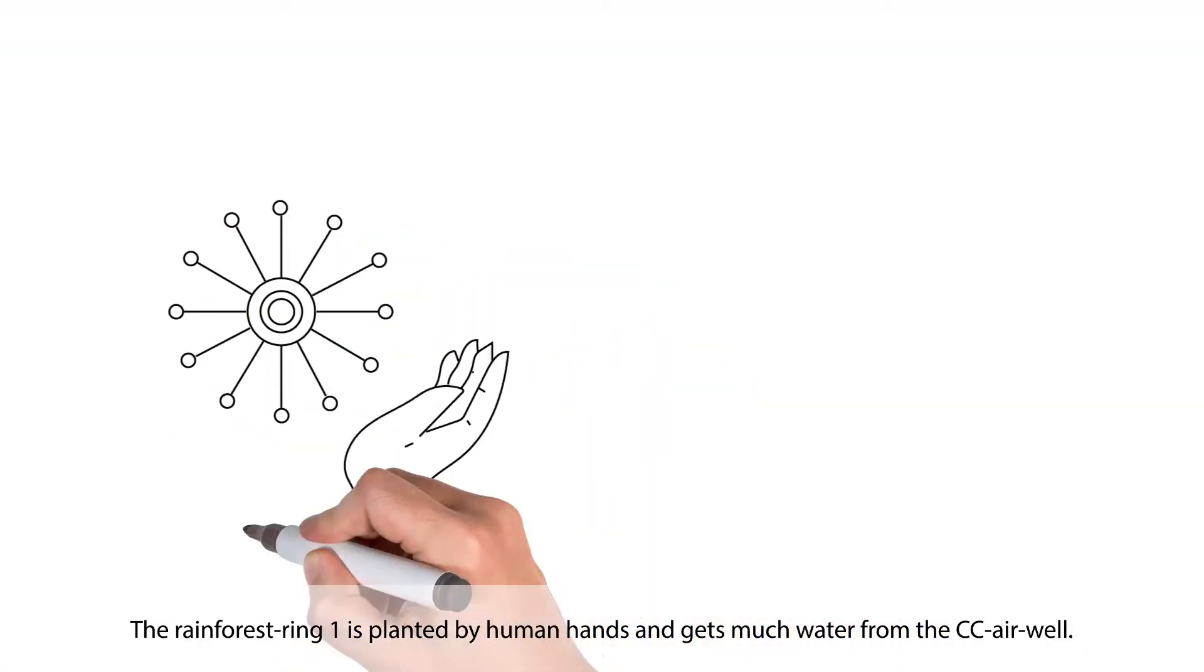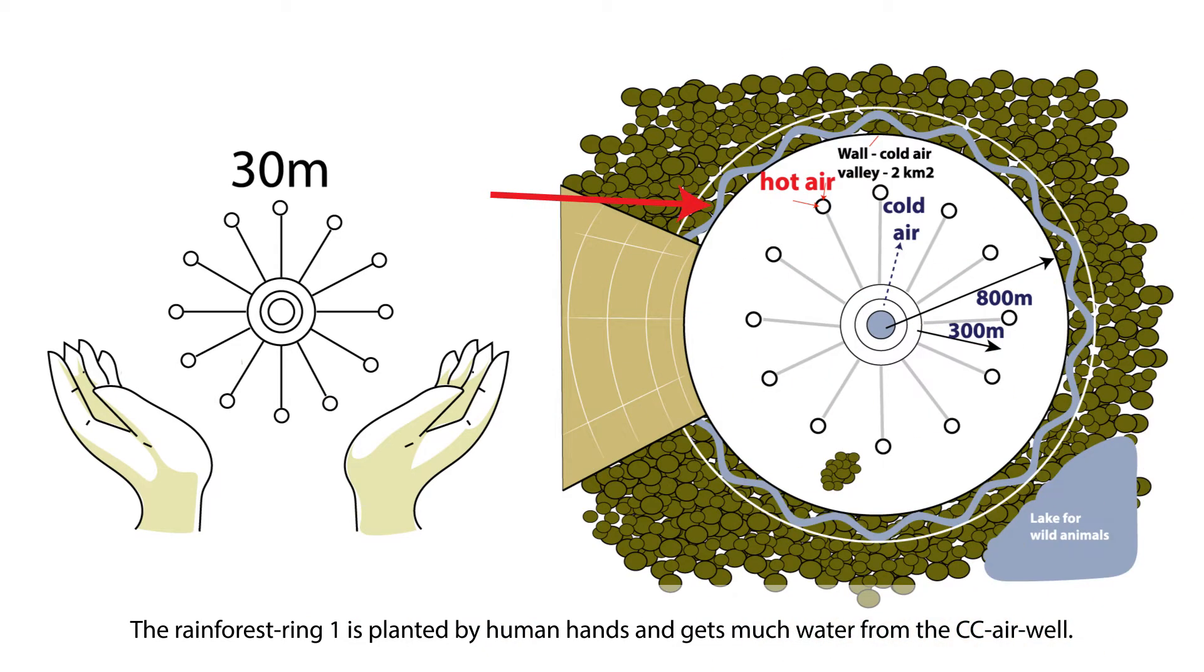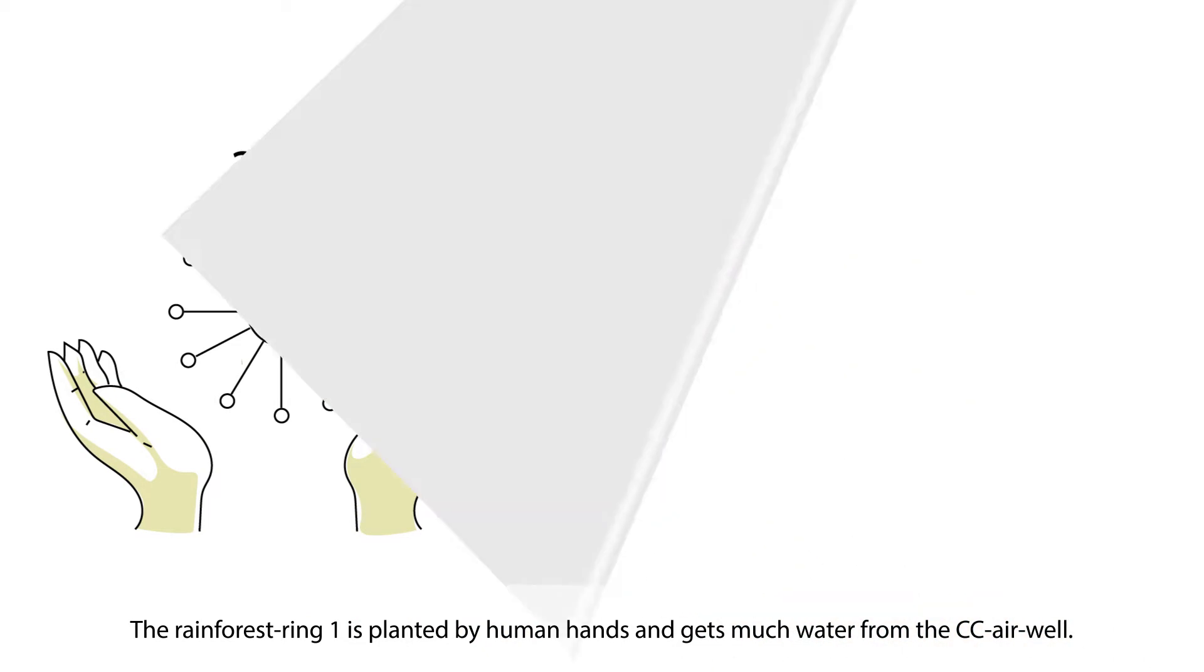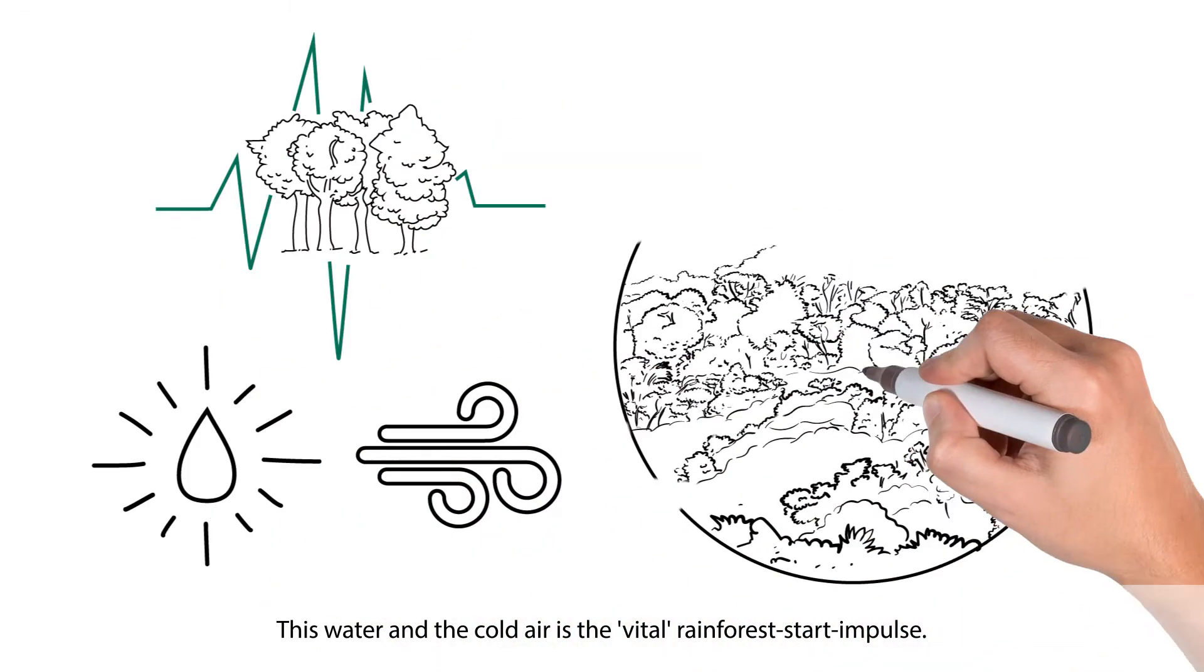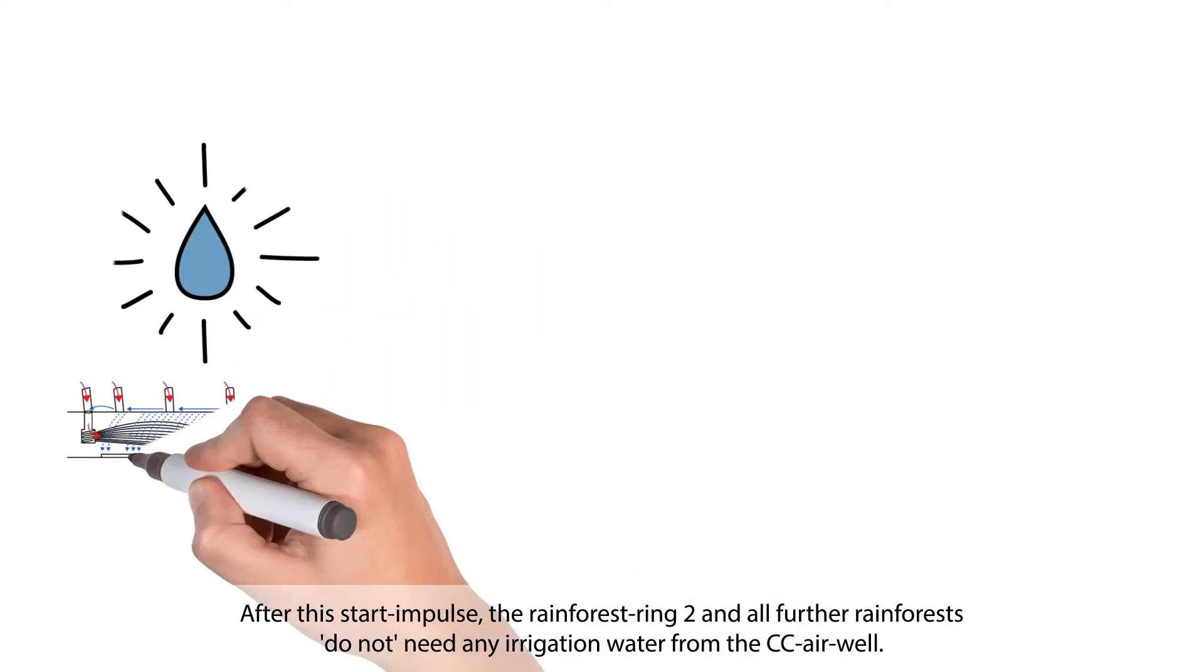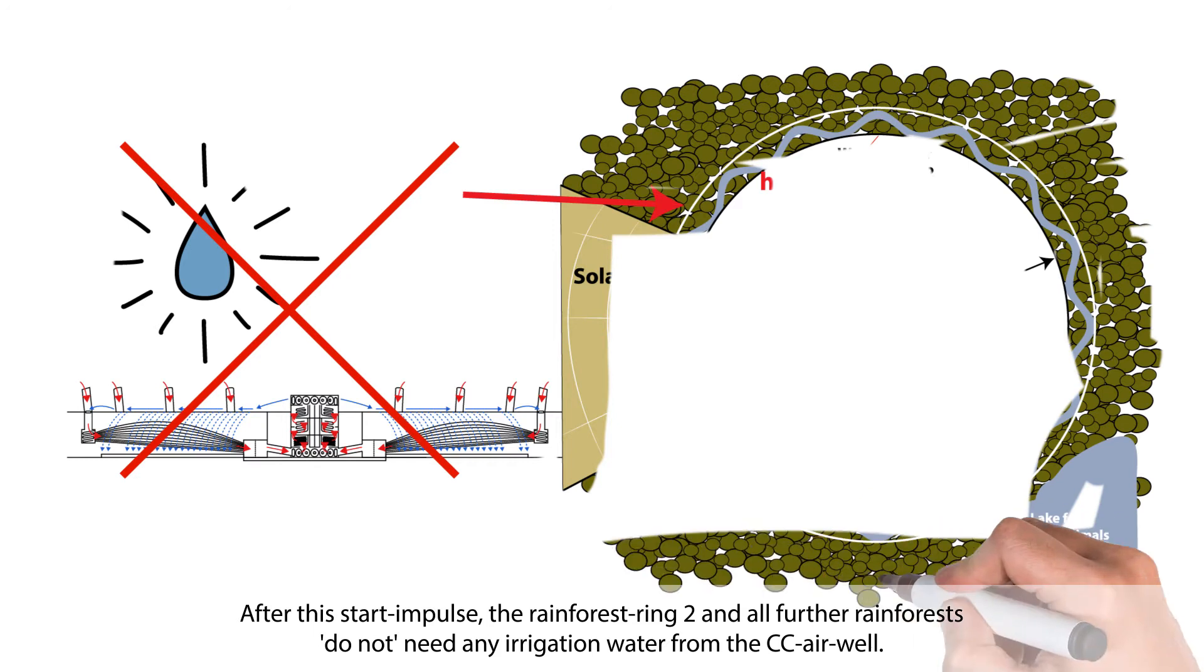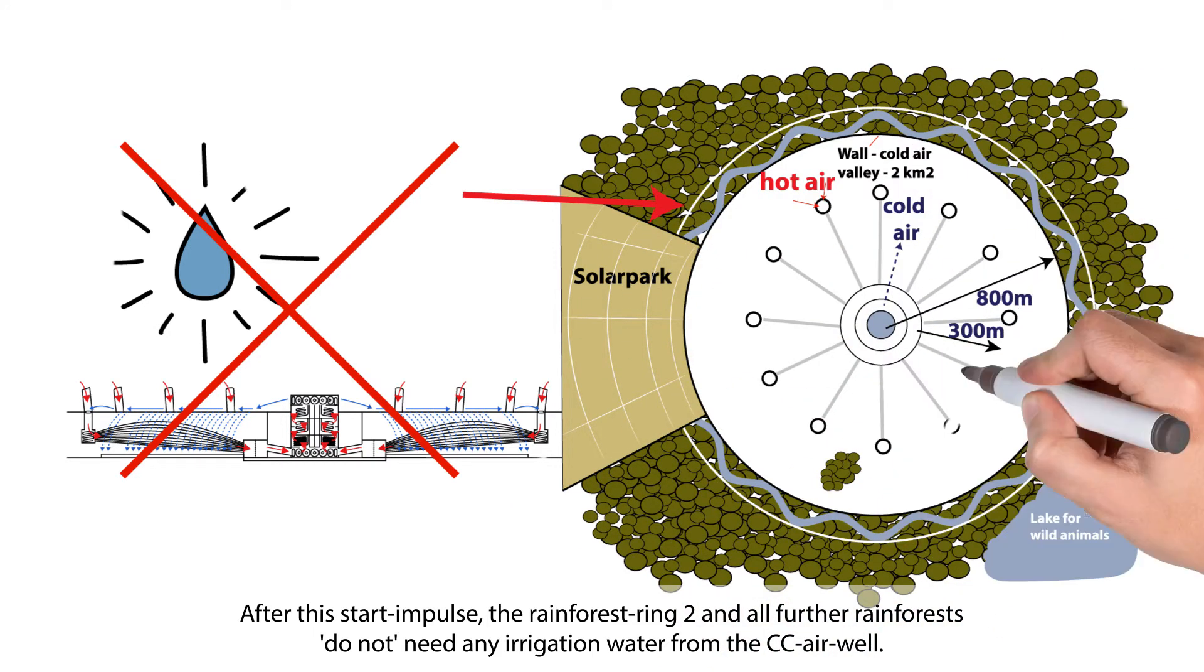The Rainforest Ring 1 is planted by human hands and gets much water from the CC airwell. This water and the cold air are the vital rainforest start impulse. After this start impulse, the Rainforest Ring 2 and all further rainforests do not need any irrigation water from the CC airwell.